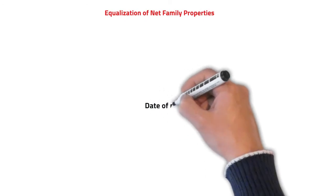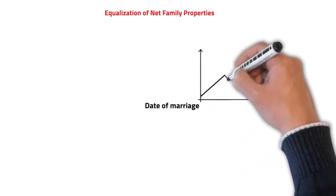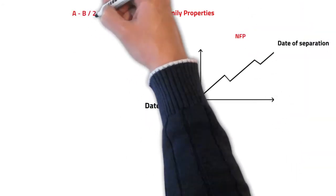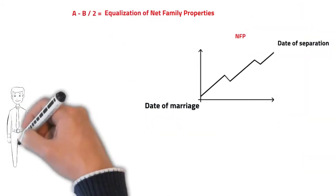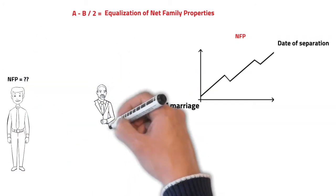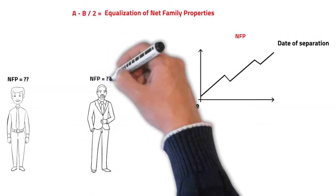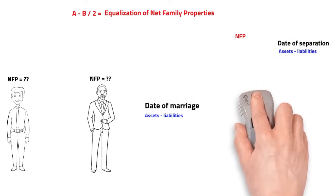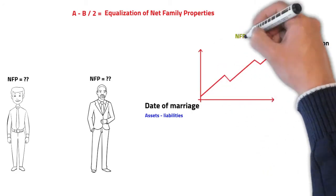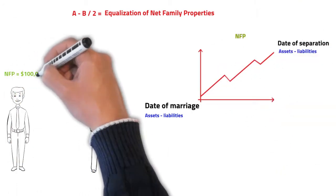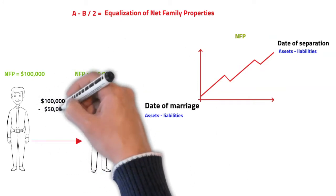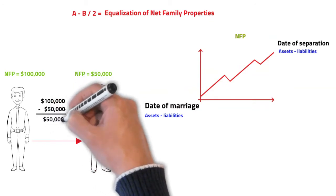We also talked about equalization in a previous video. As a short recap, it's really a numbers game based on a very simple formula. There's a process involved in calculating each spouse's NFP — we calculate both spouses' assets net of their liabilities as of two dates: the date of marriage and the date of separation. The growth in each spouse's wealth during this period is called their NFP. The spouse with the higher NFP pays the other one half of the difference. At the end, the wealth accumulated by the parties during the marriage is equalized, and both spouses leave the marriage with the same value.